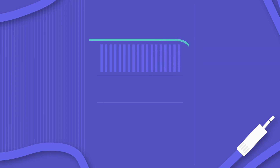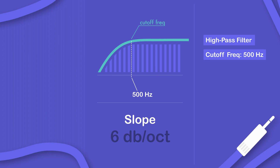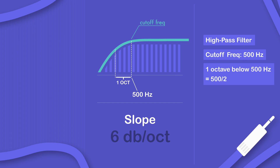You can imagine it's the same for the high pass but the other way around. So let's use the same example but this time with a high pass filter set at 500 Hz. Because we're using a high pass, the slope tells us the amount of attenuation one octave below that frequency — so instead of doubling the cutoff frequency we have to halve it, giving us 250 Hz. Let's hear that in action.